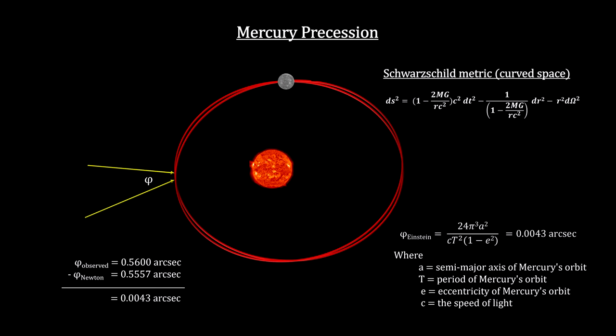With Schwarzschild's metric, Einstein came out with 0.0043 due to the curvature of space near the Sun. This was the exact number to cover the difference. He had passed the first test of his new theory.